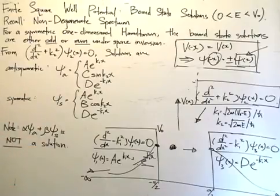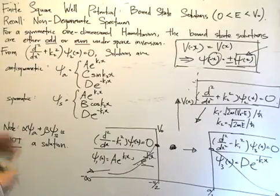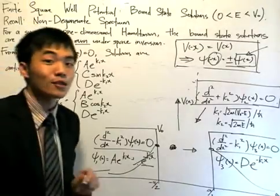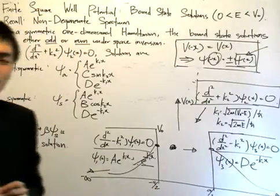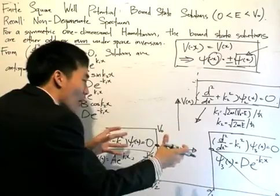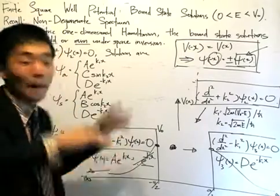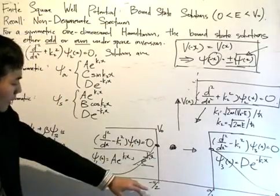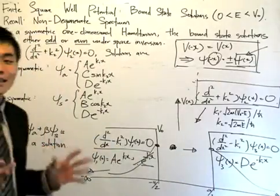So we have the solutions. What remains is determining the discrete energy values. The discrete energy values are not solved in this lesson — this lesson was really about writing out the solutions. To get the discrete energy values, we need to apply the boundary conditions at x = -a/2 and x = a/2. In the next video, we will apply these continuity conditions at those two points and see how we obtain the discrete energy values.